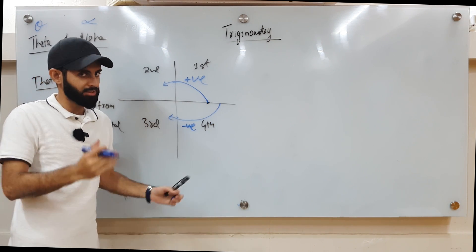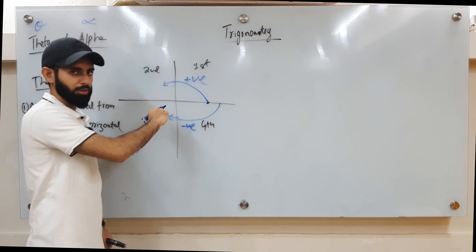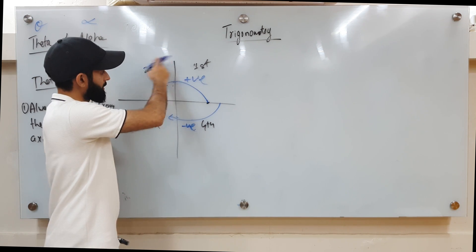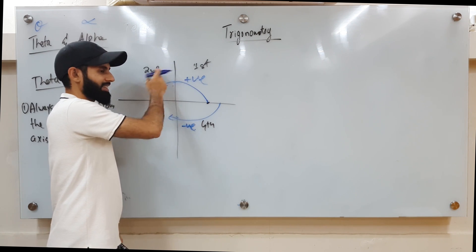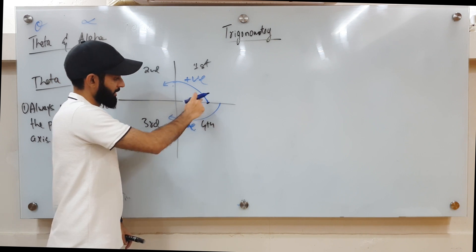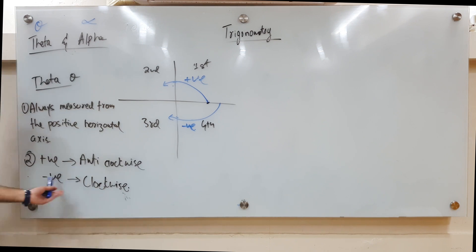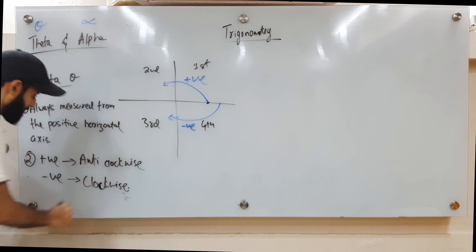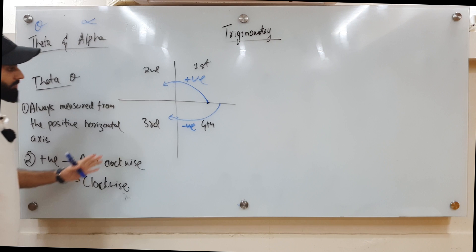This may seem counter-intuitive, but it's the same convention used when numbering quadrants — they increase in the anti-clockwise direction. So anti-clockwise theta is positive, clockwise is negative.